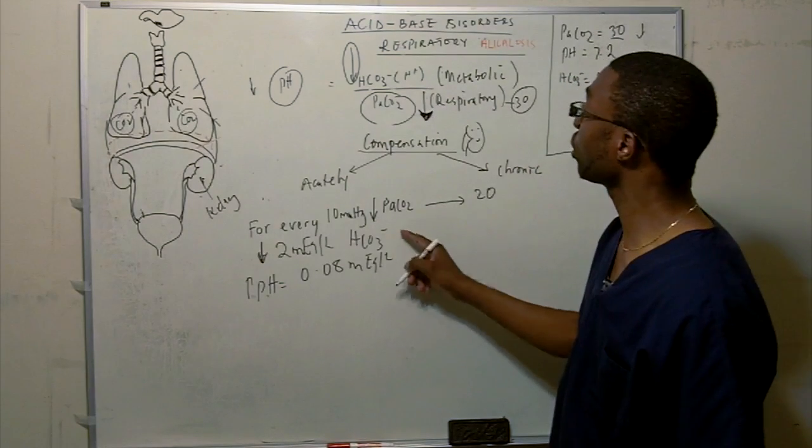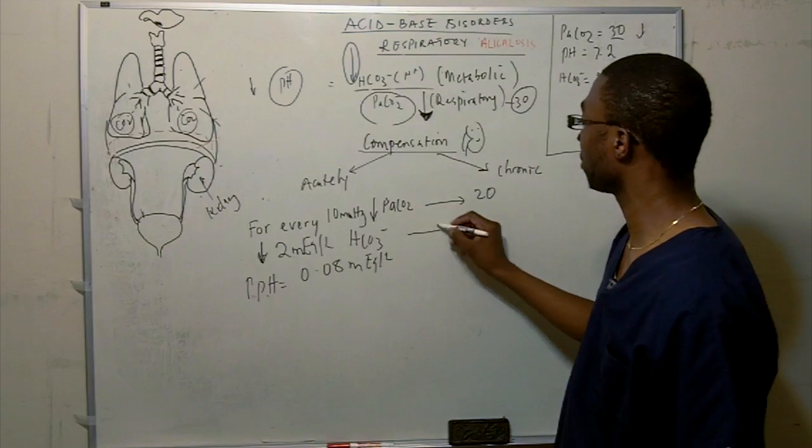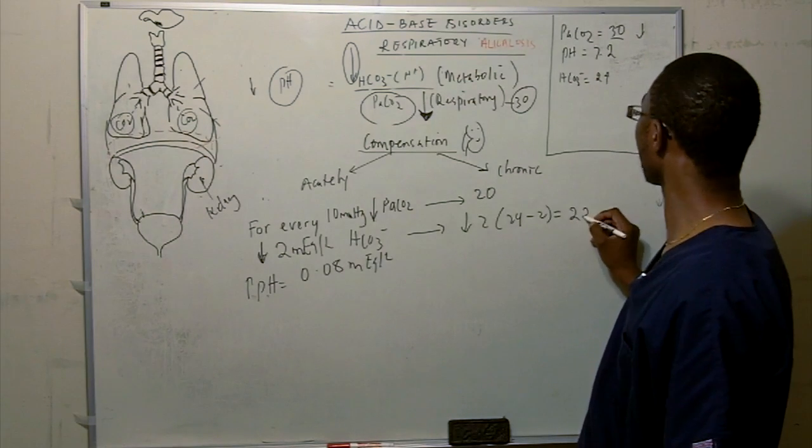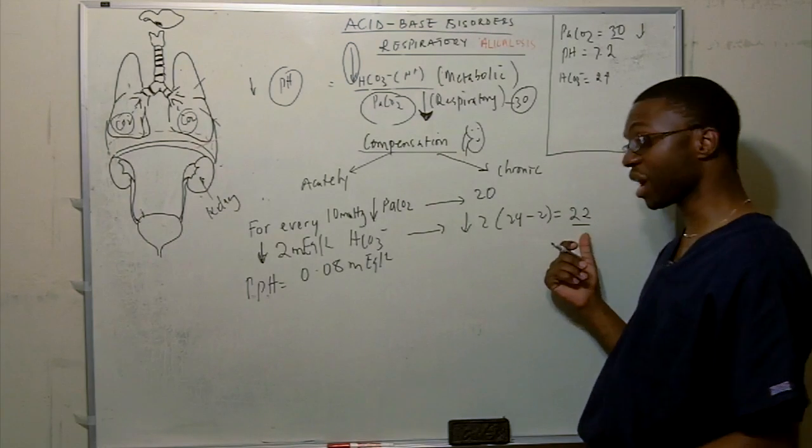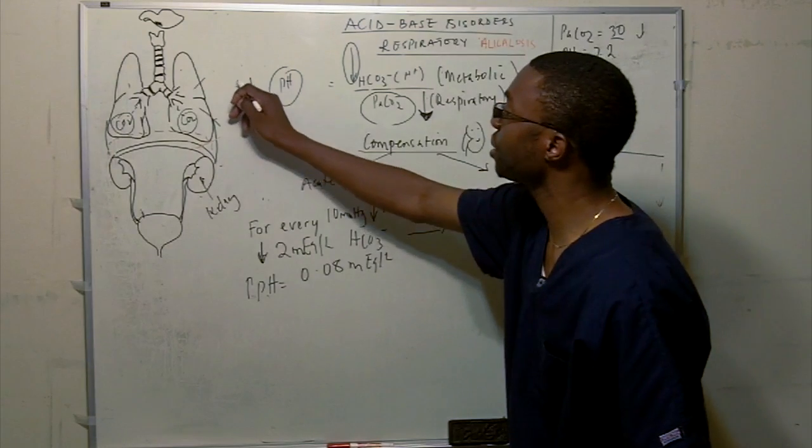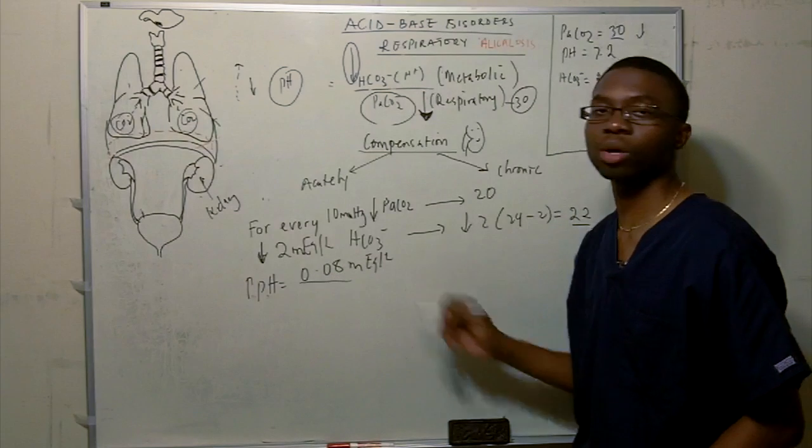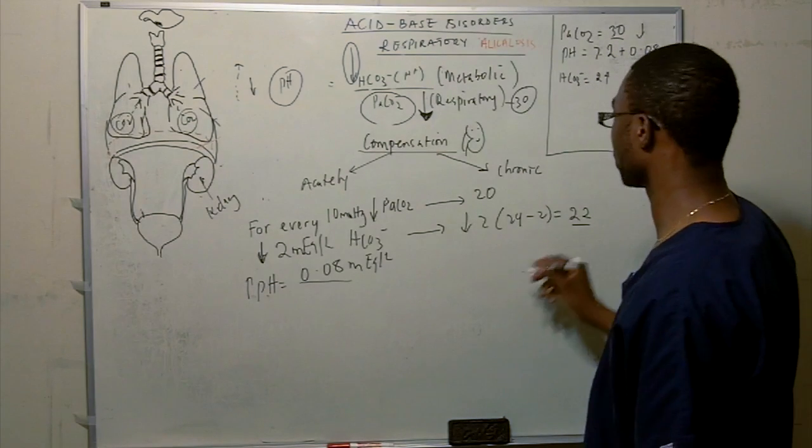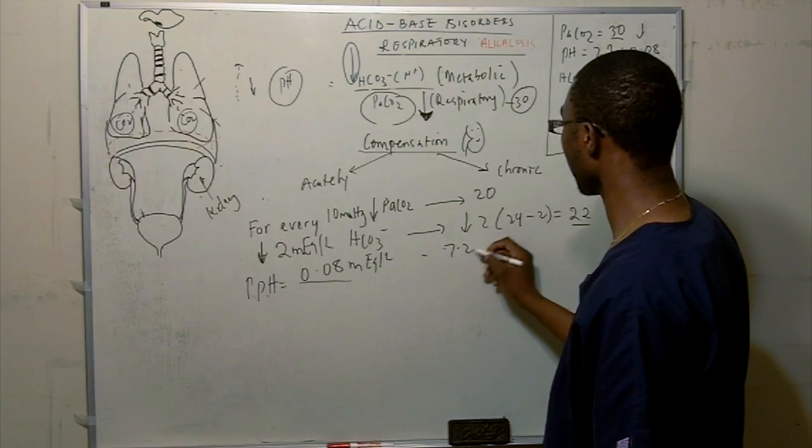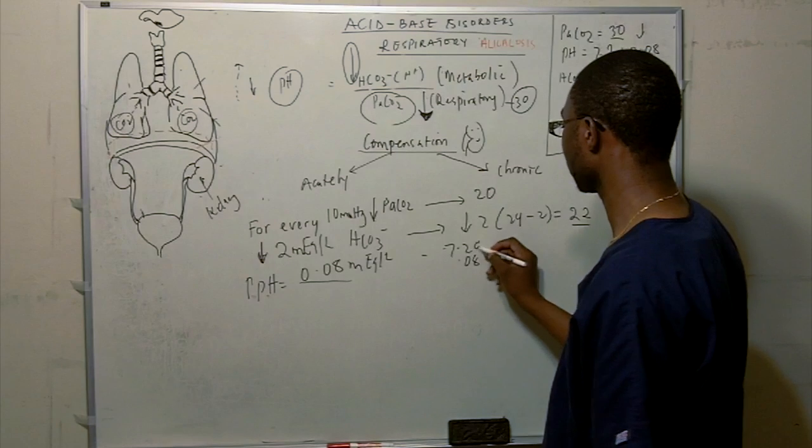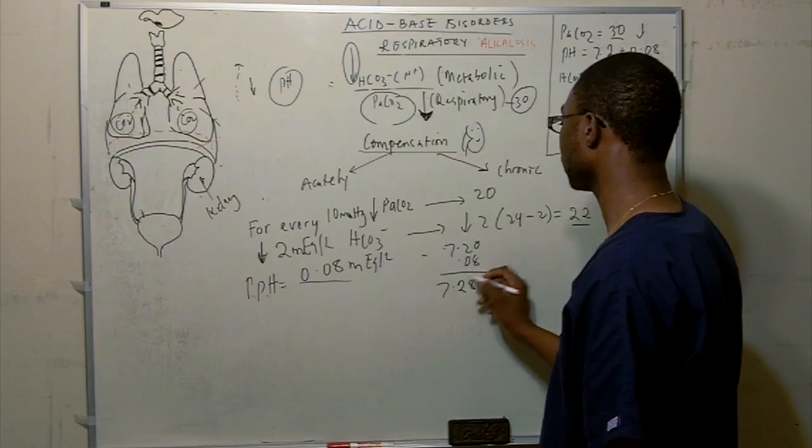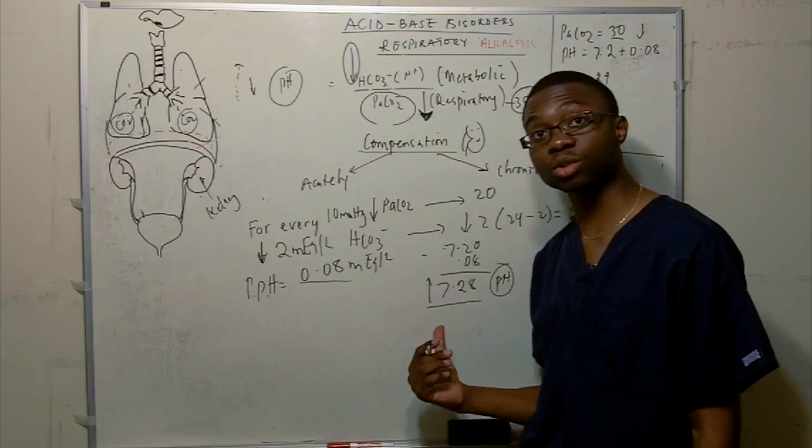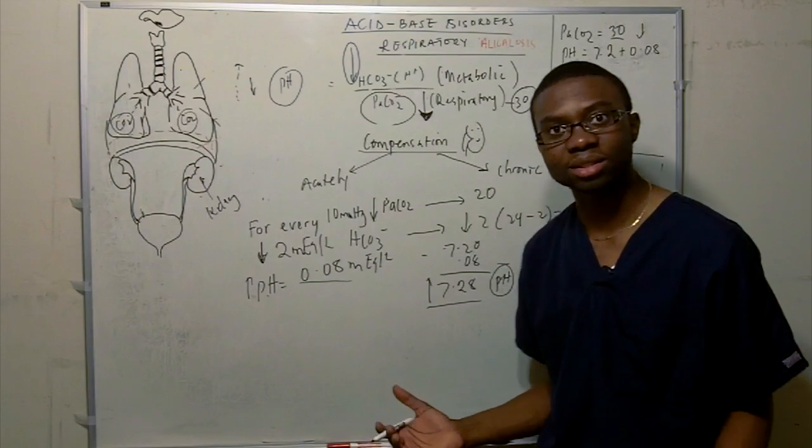This will increase our pH of our blood by 0.08 milliequivalent per liter. I like to do problems so we can kind of put this in perspective. There's a bunch of numbers. Basically what we are saying is this. Let me erase this so we can see where we are. This is pH. Let's start from the bottom. For every 10 millimeter decrease in PaCO2, let's take a problem here and pick a bunch of numbers.